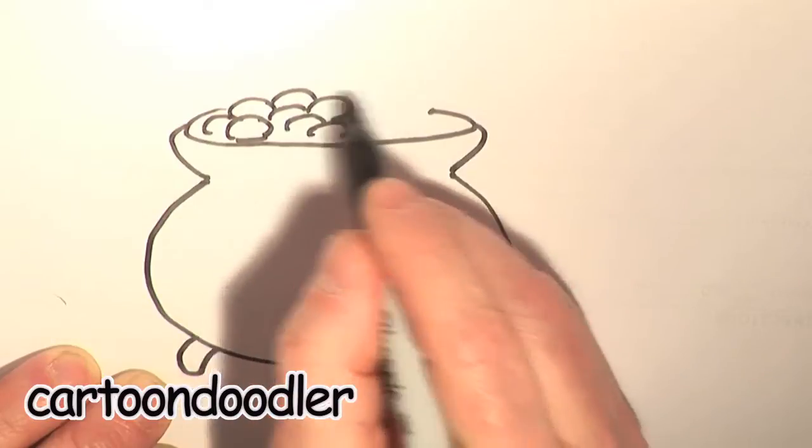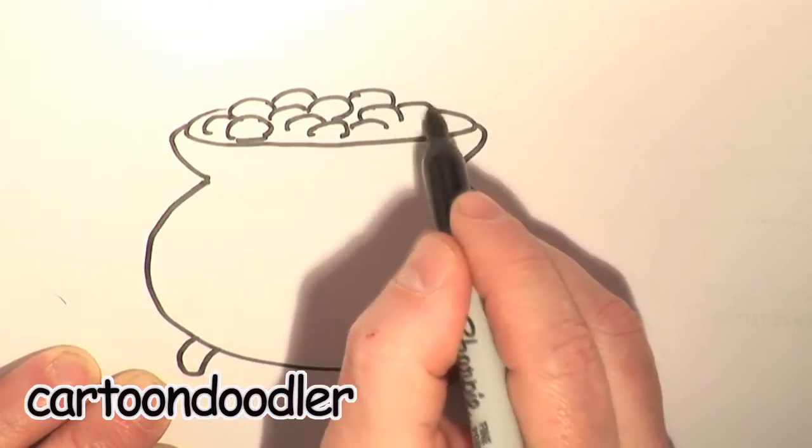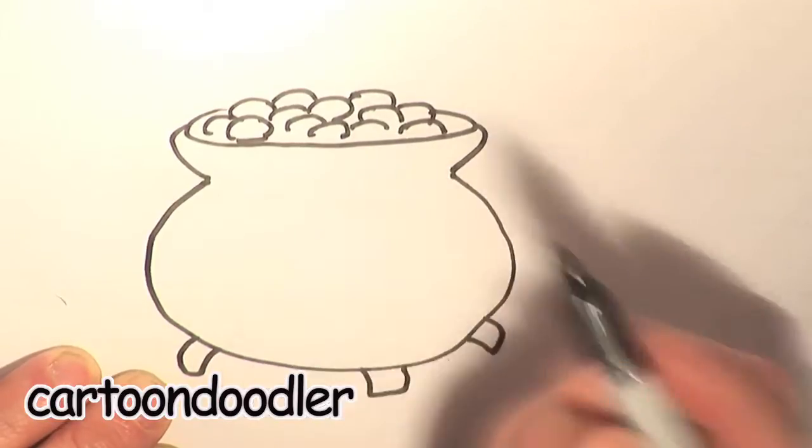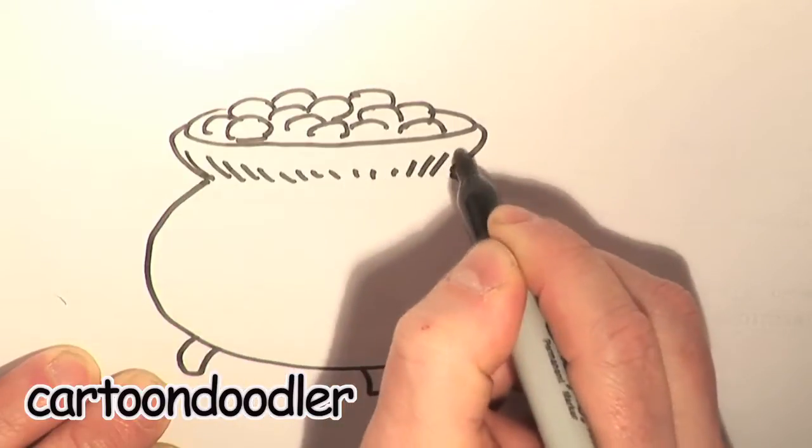Just a bunch of rounded lines there for that. Make it look like a pot full of coins. Don't really understand why everybody keeps their gold in a pot, but that's what they do. So there you go.